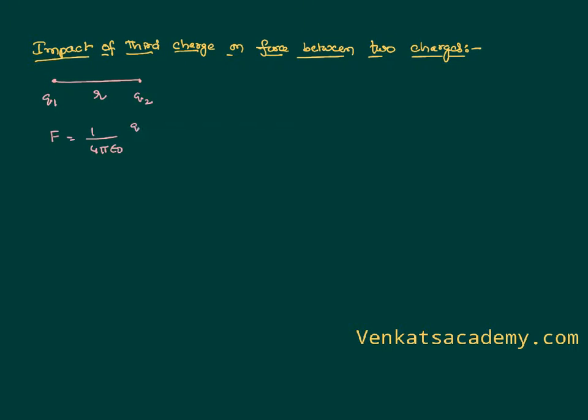1 by 4 pi epsilon naught q1 q2 by r squared. Each charge experiences the same force, both of them are being repelled with this magnitude of force, but these two forces are not going to cancel because they are acting on different bodies.